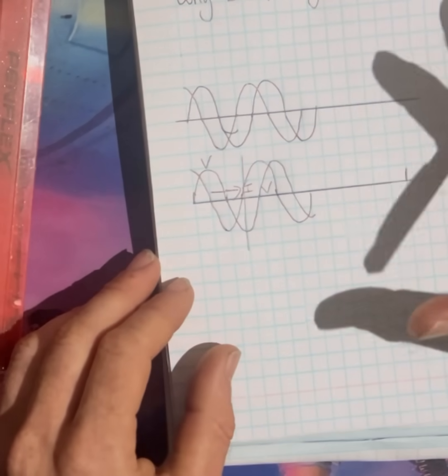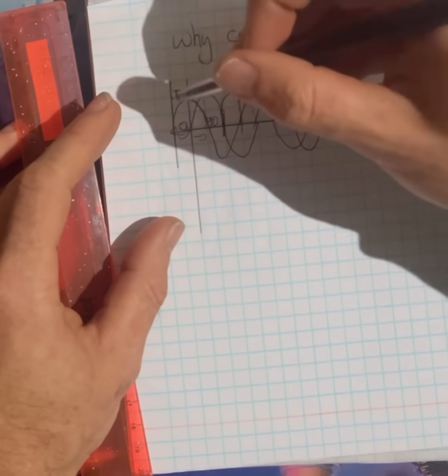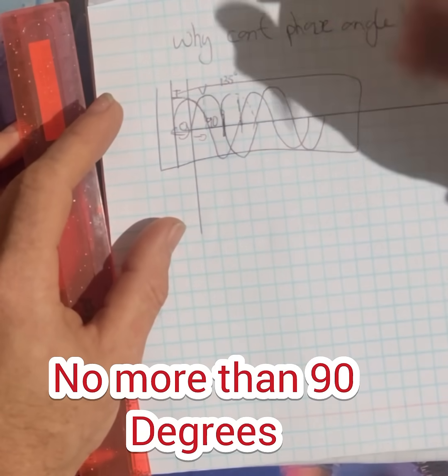So yeah, that's why we say you either get lagging or leading, and it can be no more than 90.